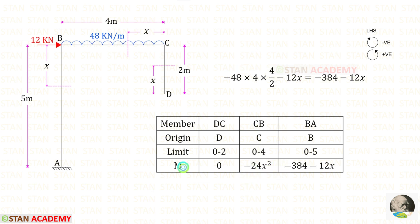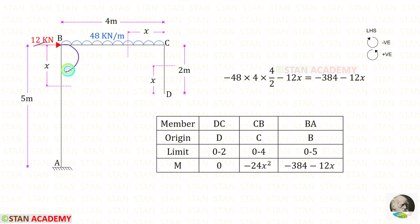Now let us find the moment M in member BA. Up to this section we have the point load and the UDL. The UDL acts in the clockwise direction, so it is negative, and the distance is 4, giving 4 × 4/2. The point load also acts in the clockwise direction, so it is also negative, with distance X. When we calculate this we get minus 384.